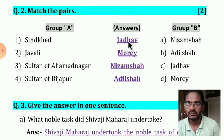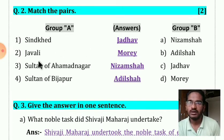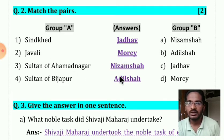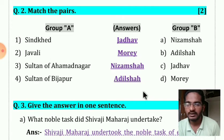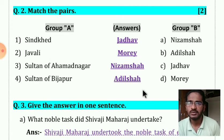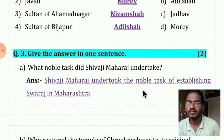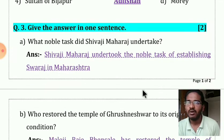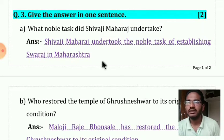The answers for Match the Pairs are: Sindakhed — Jadav; Jowli — More; Sultan of Ahmadnagar — Nizam Shah; Sultan of Bijapur — Adil Shah.